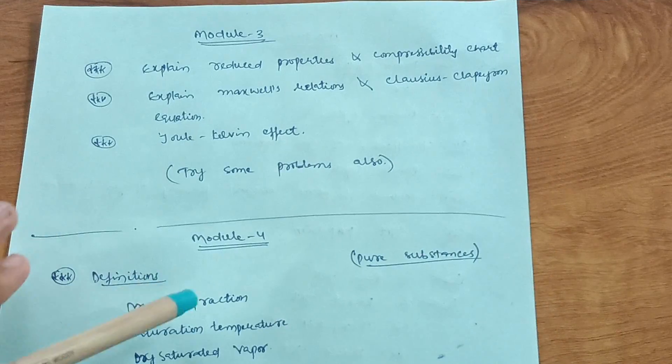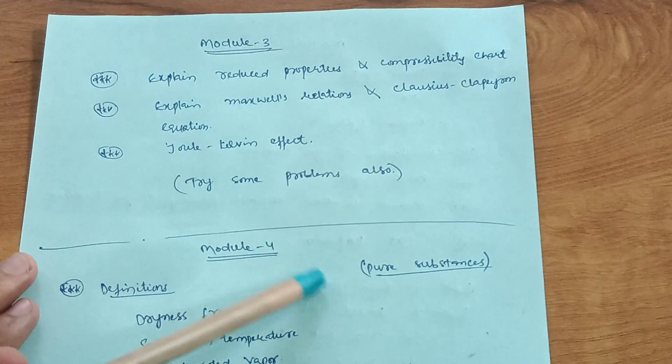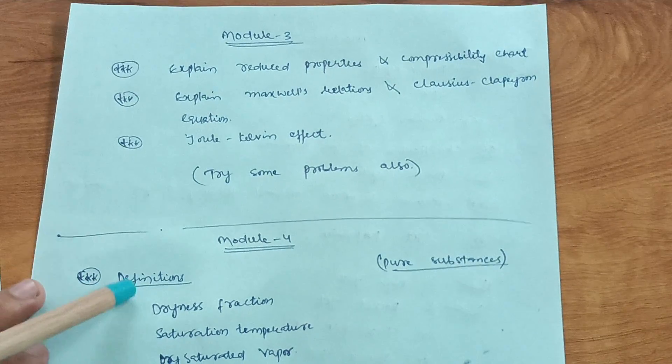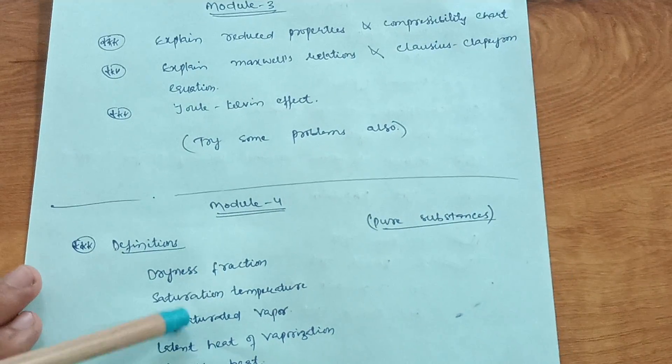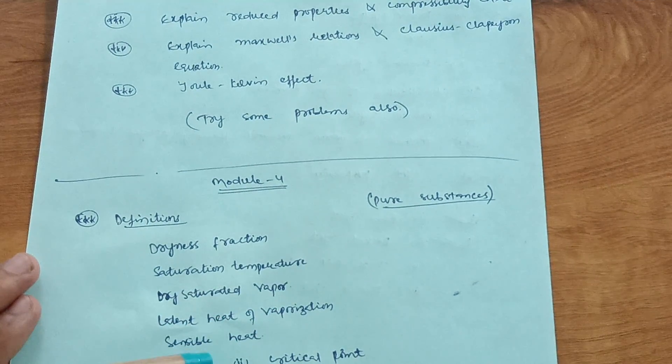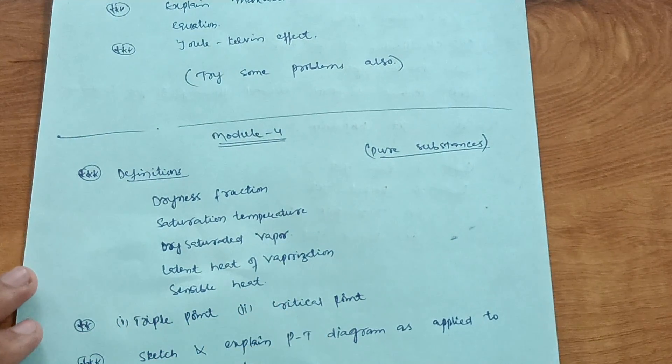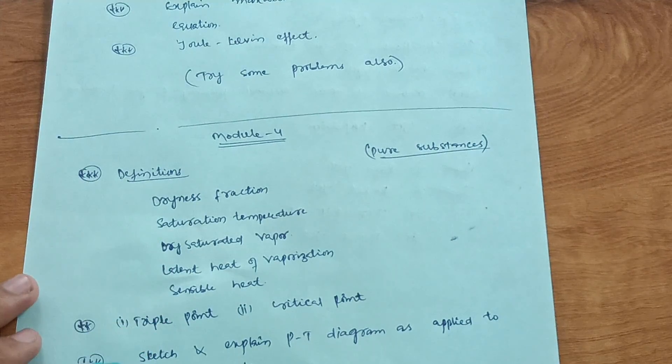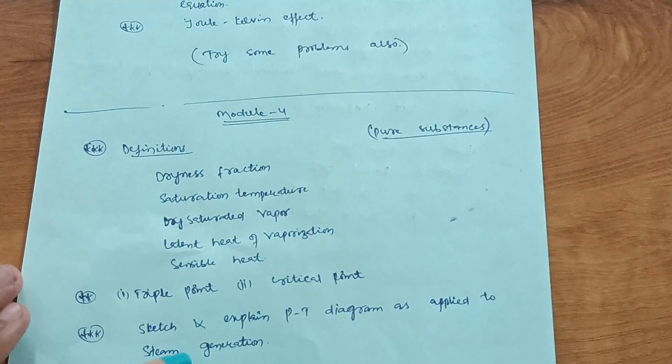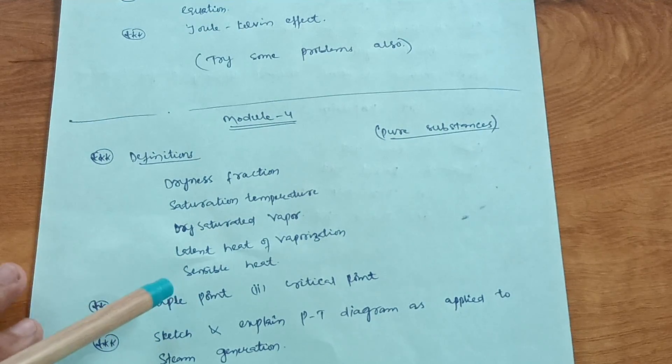Next is Module 4, which contains two chapters. First chapter is pure substances. You have to cover definitions like dryness fraction, saturation temperature, dry saturated vapor, latent heat of vaporization, and sensible heat. Also triple point and critical point. Next, sketch and explain PT diagram as applied to steam generation. These are important topics from pure substances.